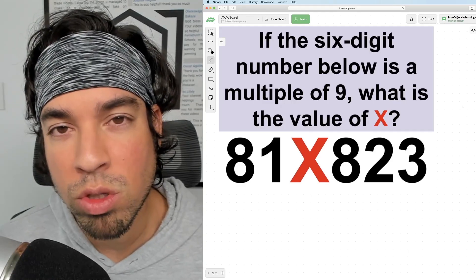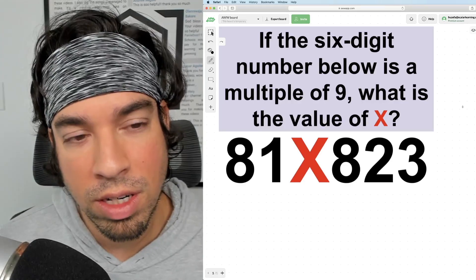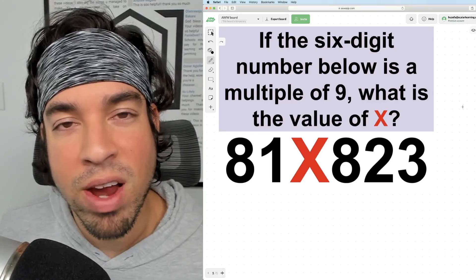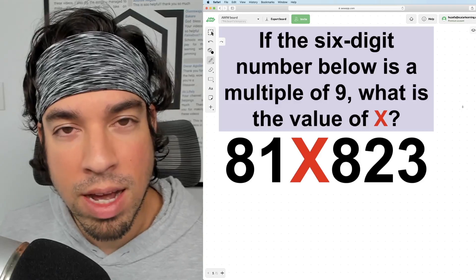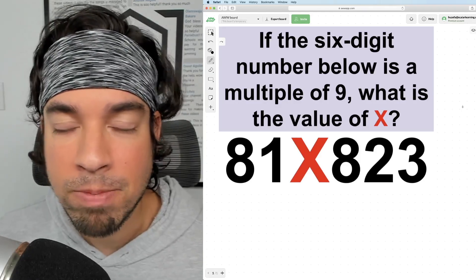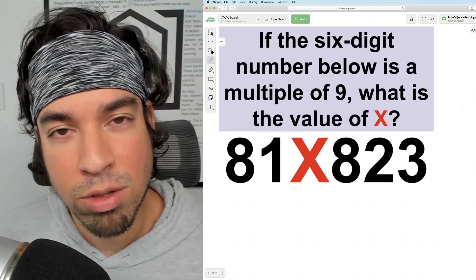So if you know the divisibility rules for nine, you're good to go. And here it is: if the sum of the digits of a number add up to a multiple of nine, like 9, 18, 27, your number is going to be divisible by nine.